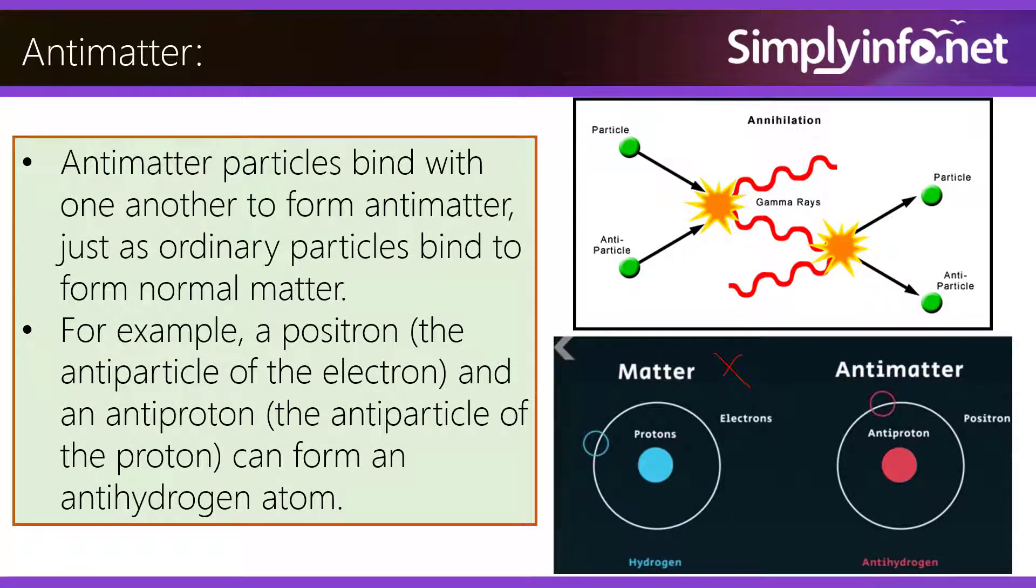Antimatter particles bind with one another to form antimatter, just as ordinary particles bind to form normal matter. For example, a positron, the antiparticle of the electron, and an antiproton, the antiparticle of the proton, can form an antihydrogen atom.